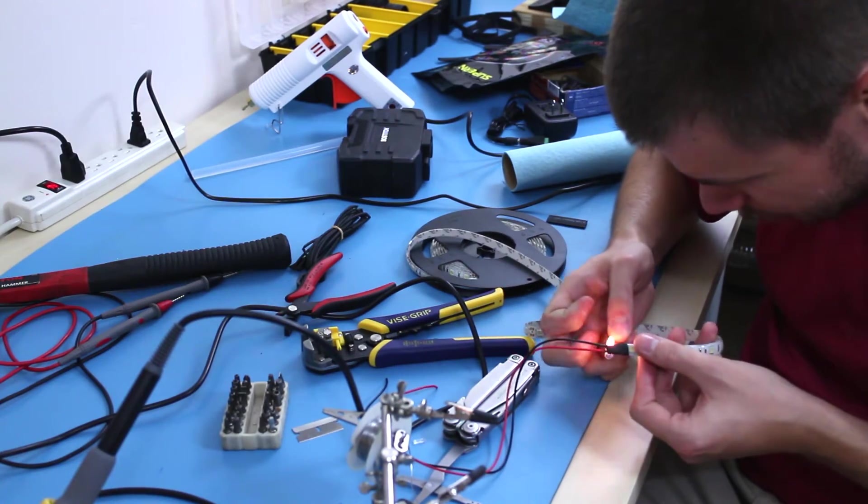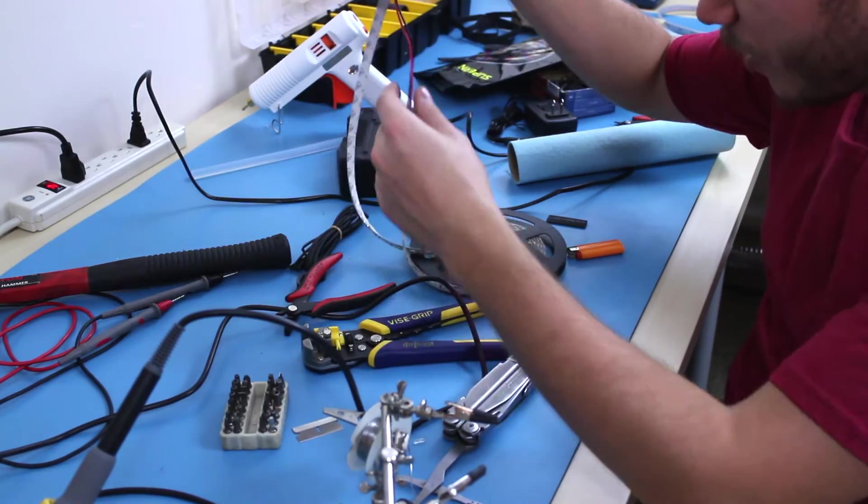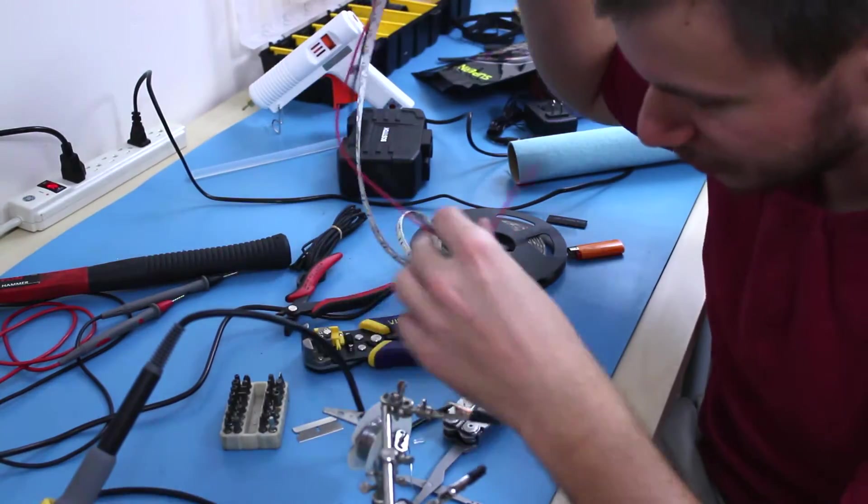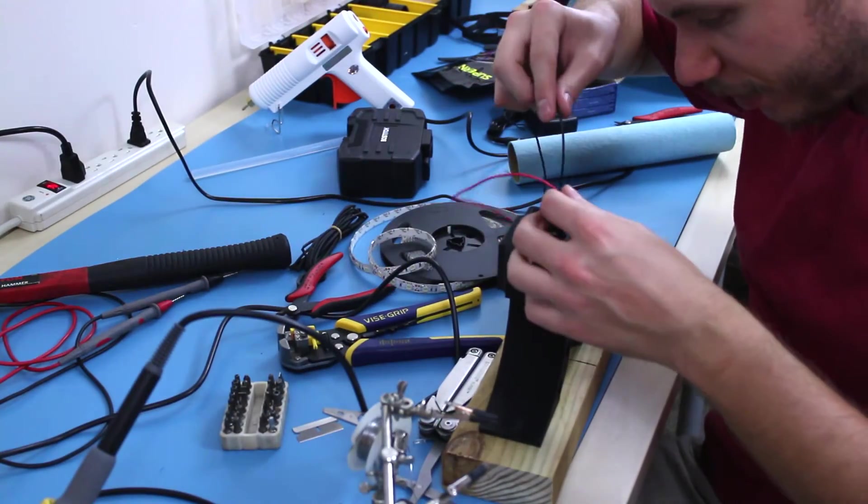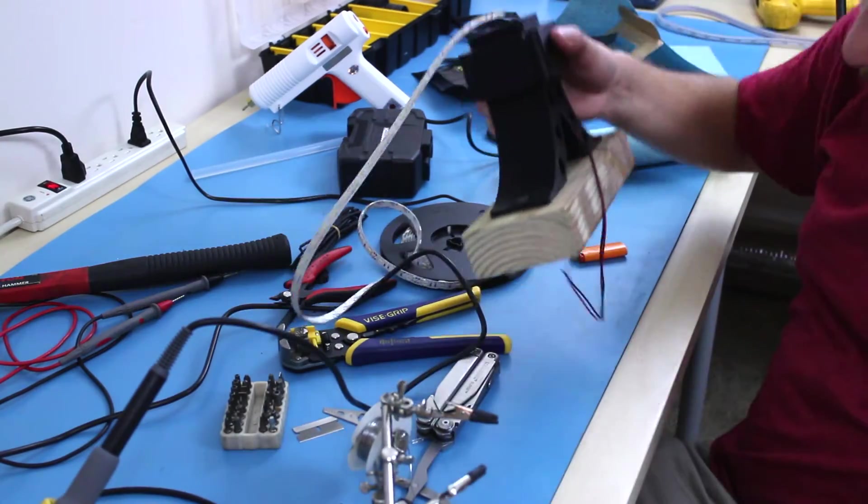We're just gonna leave it like this for now because we have to loop it through one of these legs here. I'm just gonna go ahead and loop these two wires through the holes in this leg base. There we go, got that started and wired.